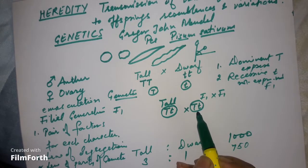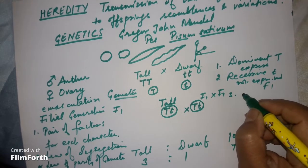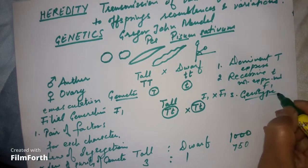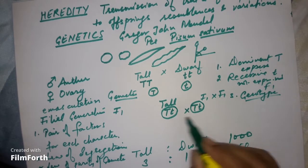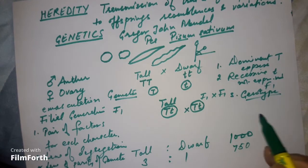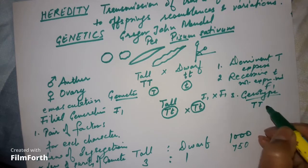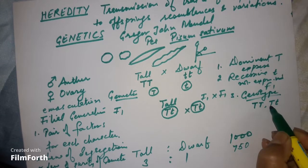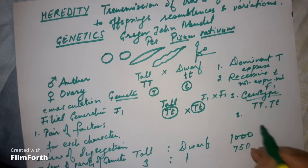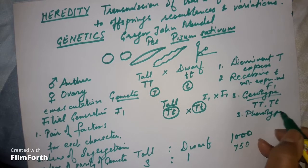The combination of genes inside an individual is called the genotype. For tallness, a plant can be genotypically capital T capital T or capital T small t — both are phenotypically tall. So for the phenotype of tallness there are two possible genotypes.